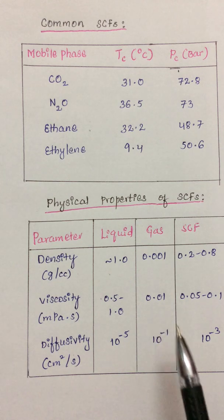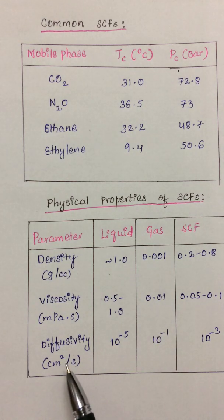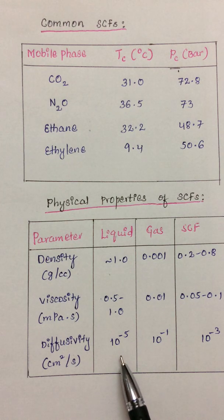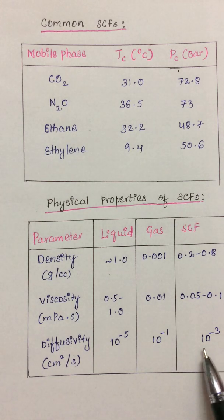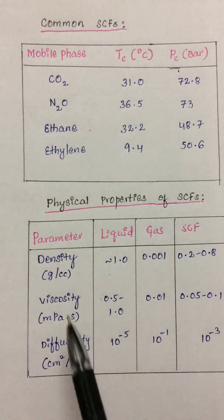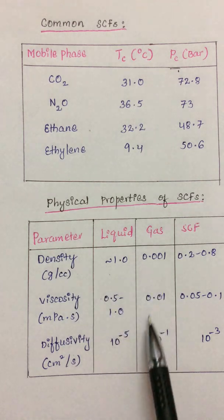When it comes to the diffusivity range, the diffusivity range for liquid is about 10^-5, whereas for a gas it is 10^-1. For supercritical fluid it is anywhere in between, so we call it as intermediate diffusivity range if we look at the values.